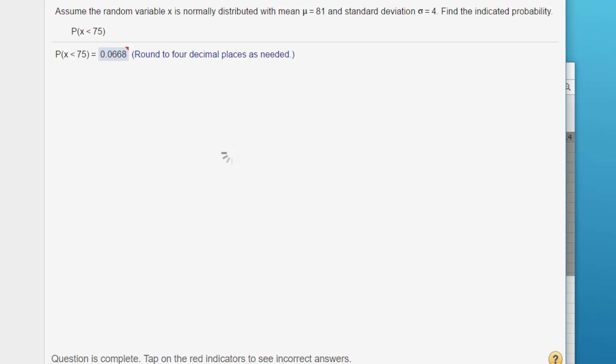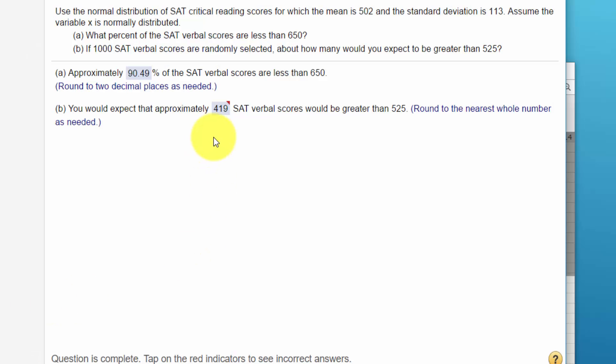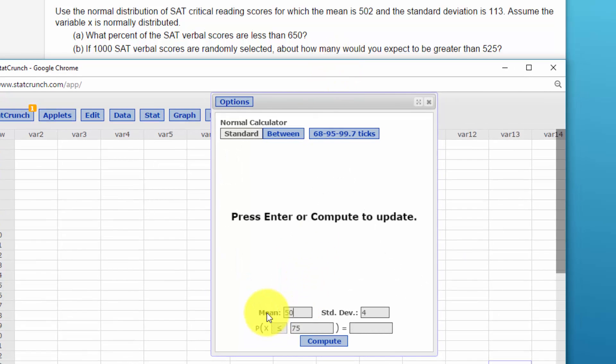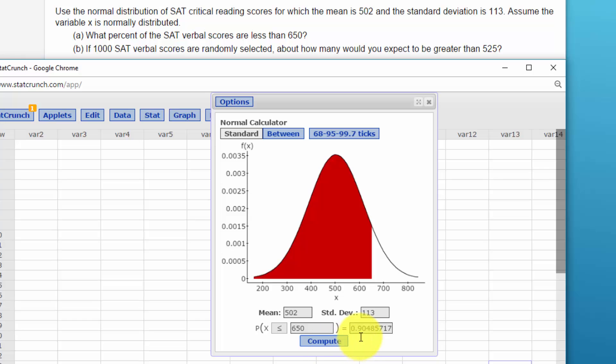The last question this person had problem with has to do with our good old SAT question. And they give us a mean reading score of 502 with the standard deviation of 113. Assume it's normally distributed. What percent of the SAT scores are less than 650. So let's call up our calculator again. This time we put in the mean of 502, and the standard deviation of 113. And what percent of the scores are less than 650?